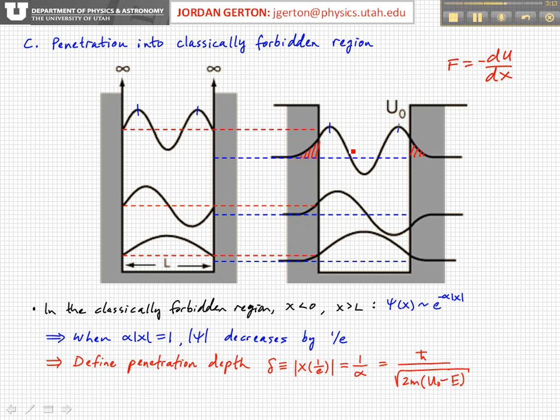If you squared these wave functions, remember, we would get the probability density. So we're going to have a finite probability of actually finding the particle outside the walls.